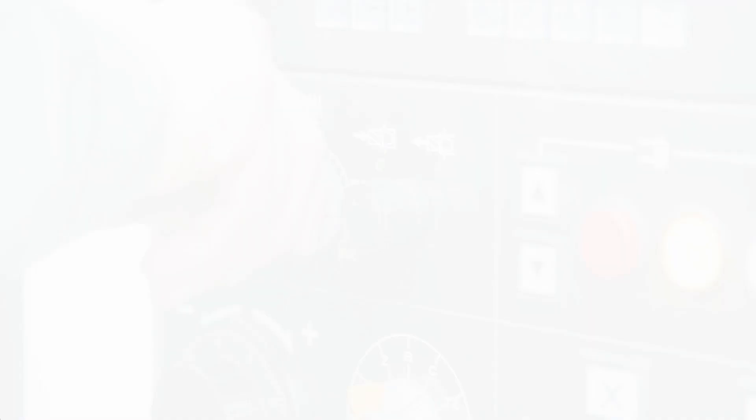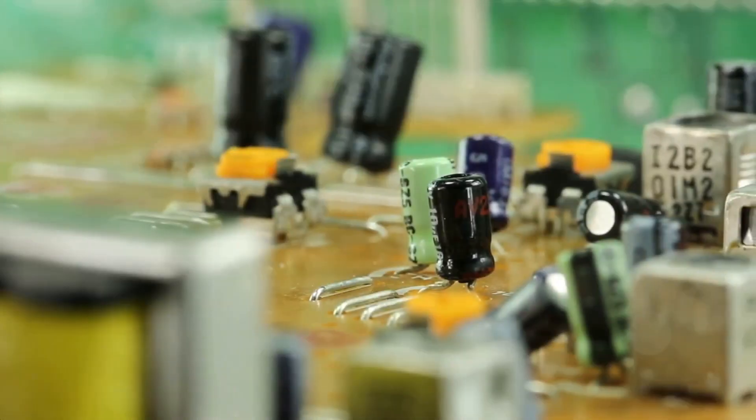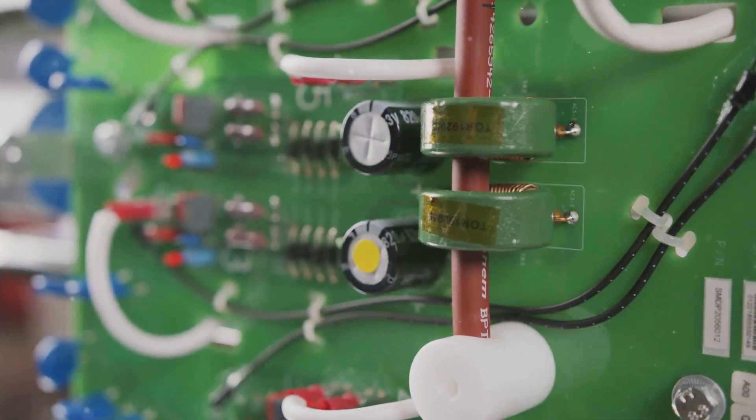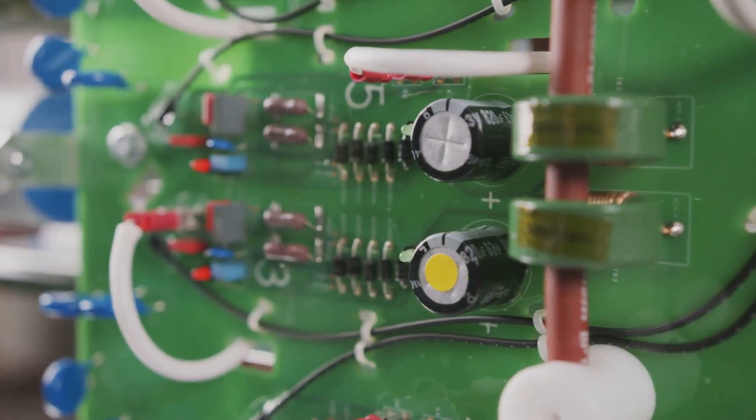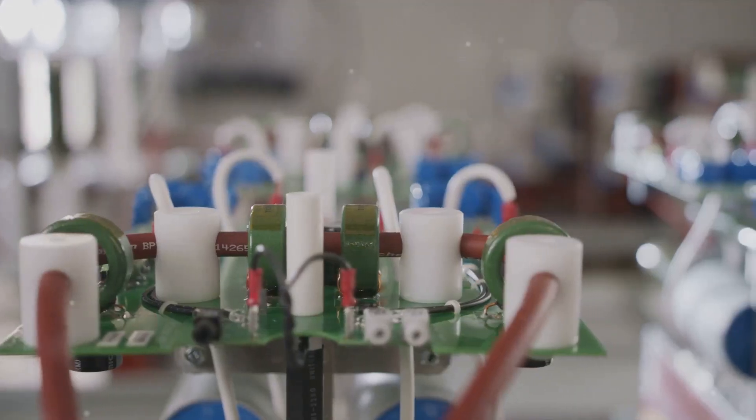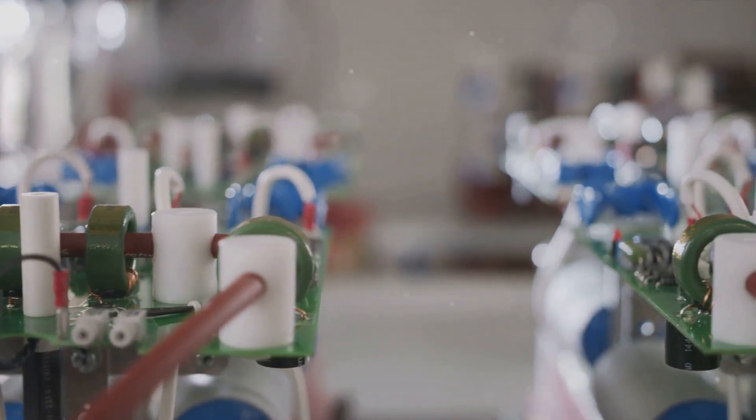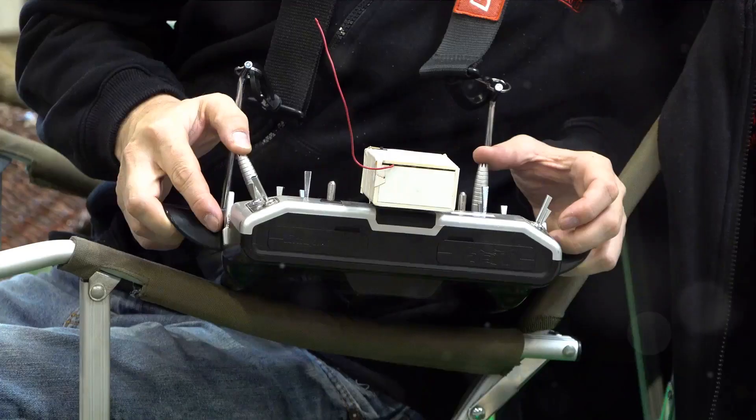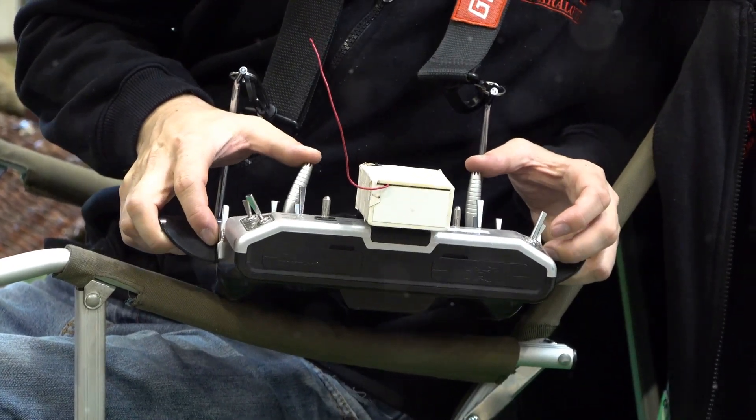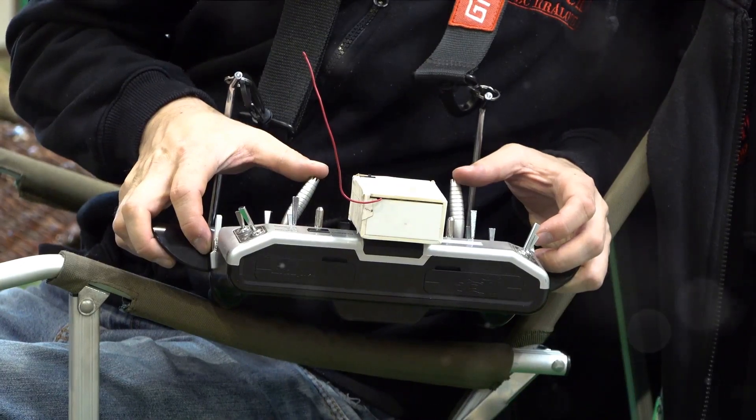So how does it pull off this nifty trick? Well, it's all about the design. A potentiometer consists of a resistive track and a movable contact known as a wiper. The resistive track is usually made of a material like carbon, which naturally resists the flow of electricity. The wiper glides along this track, and depending on its position, it changes the resistance.